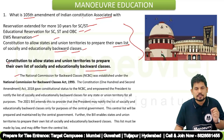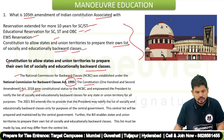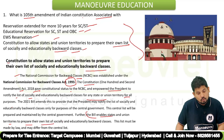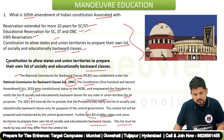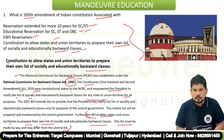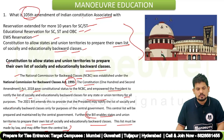In detail: the National Commission for Backward Classes (NCBC) was established under the NCBC Act 1993. The Constitution's 102nd Amendment of 2018 gave constitutional status to NCBC and empowered the President to notify the list of socially and educationally backward classes. The 105th Amendment enables states and union territories to prepare their own list of socially and educationally backward classes, which must be made by law and may differ from the central list.